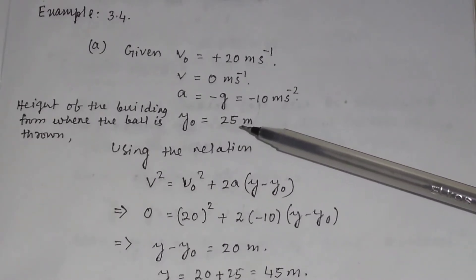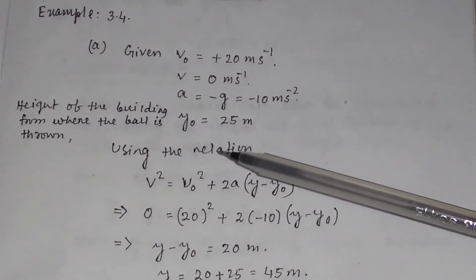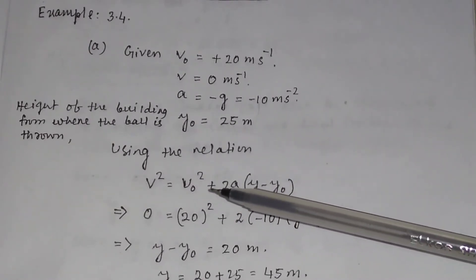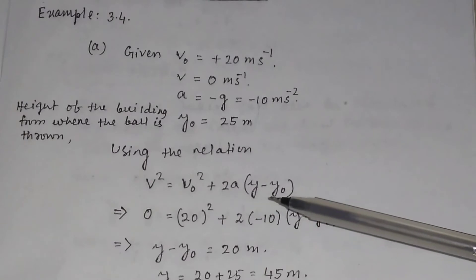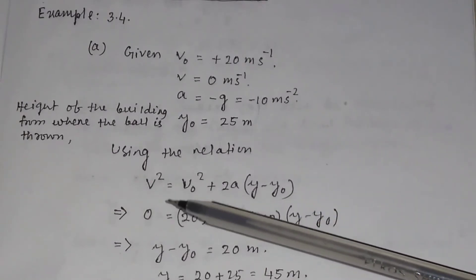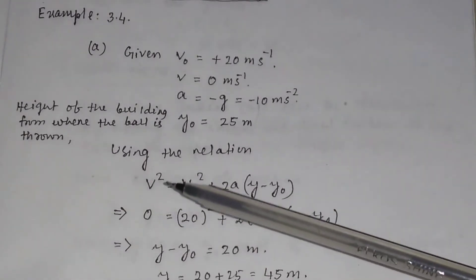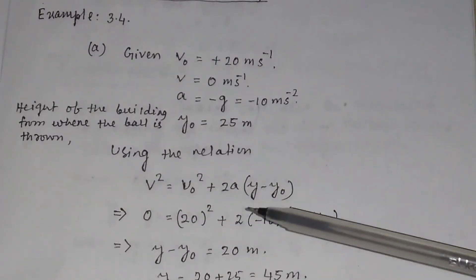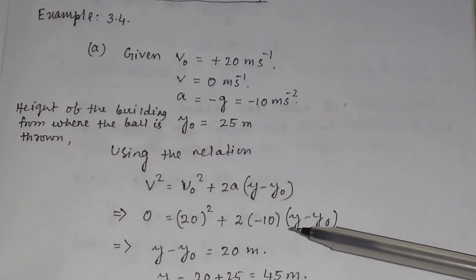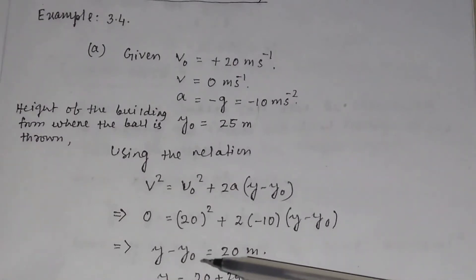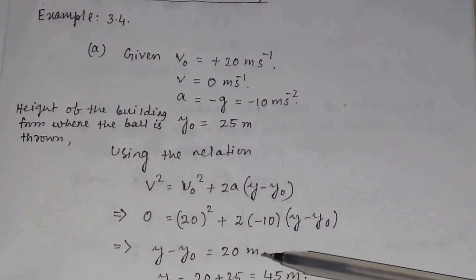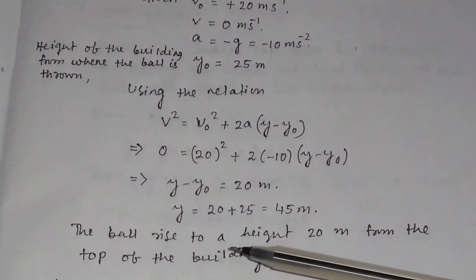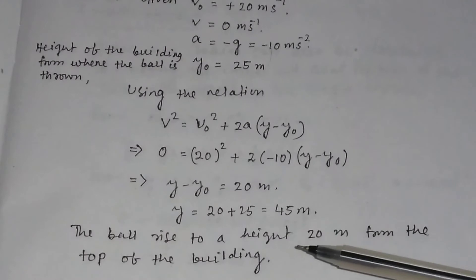Y-zero, the height of the building from where the ball is thrown, is given as 25 meters. Using the equation of motion, v² equals v₀² plus 2a into (y minus y-zero), and substituting the final velocity equal to 0, initial velocity 20, and acceleration minus 10, we get y minus y-zero equal to 20 meters. So the ball rises to a height of 20 meters from the top of the building.